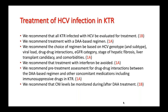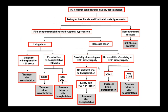All kidney transplant recipients who have HCV should be evaluated for treatment and should receive a directly acting antiviral agent. The choice of regimen should be based on HCV genotype and subtype, eGFR category, liver fibrosis, and other parameters. Treatment with interferon should be avoided in kidney transplant recipients as it can precipitate rejection. Pre-treatment assessment of drug-drug interactions must be made, and CNI levels should be monitored during and after antiviral therapy.